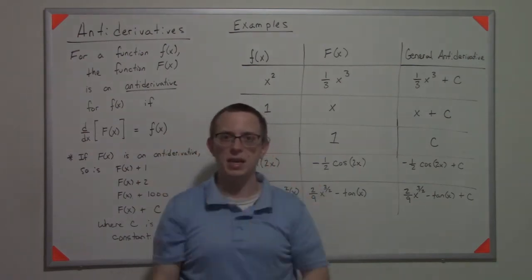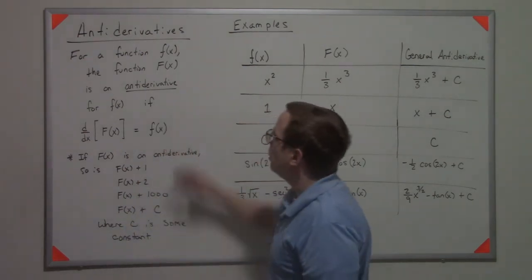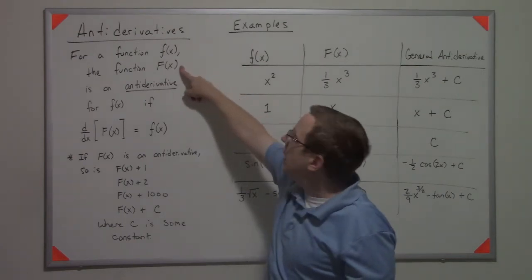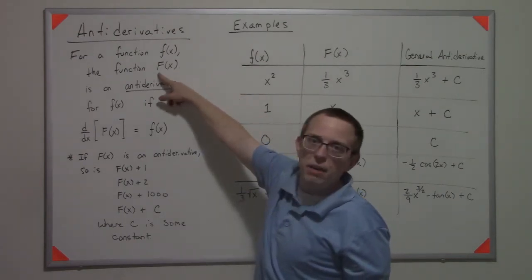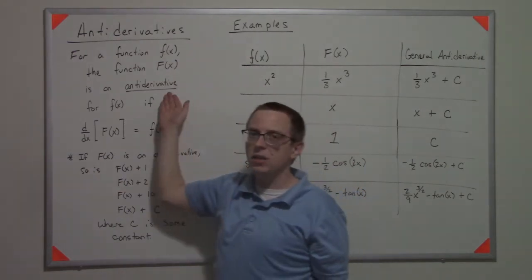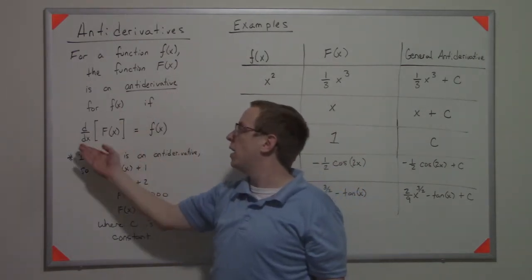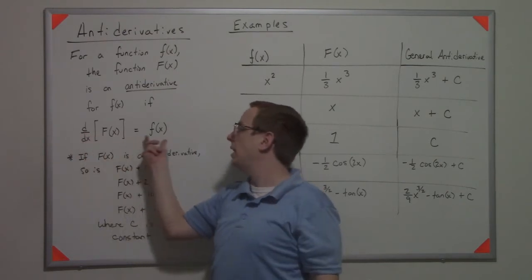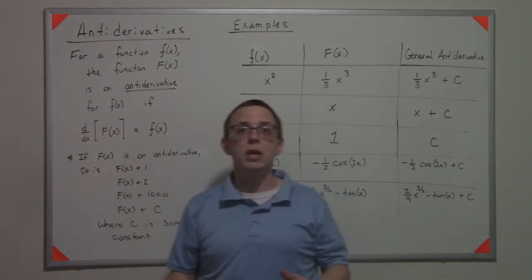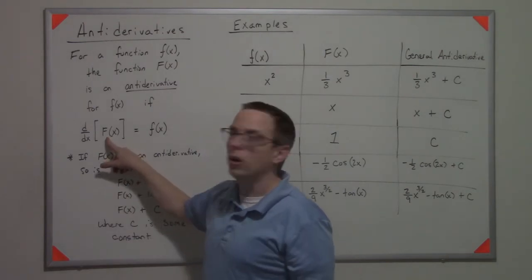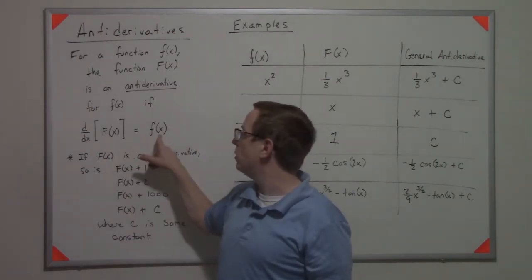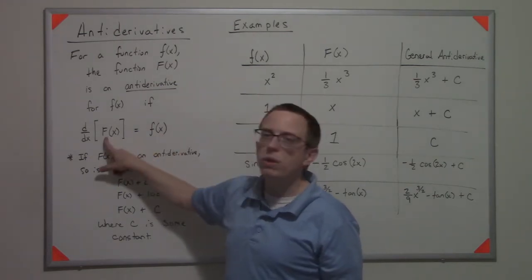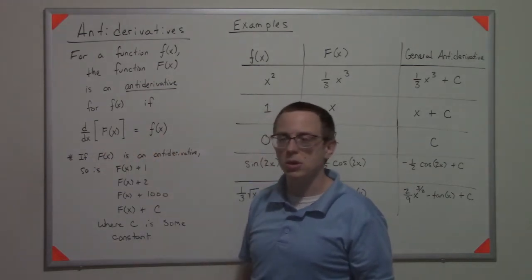If I have a function, then this other function big F(x) is an antiderivative for f(x) if, when I take the derivative of big F, I get little f. Usually we start here and apply the derivative to get here, but what happens if we start with the output? How do we figure out what the input looks like?